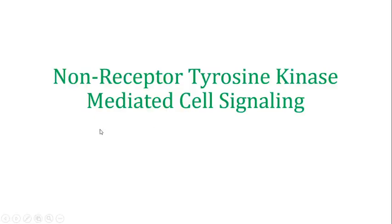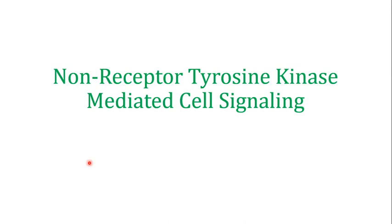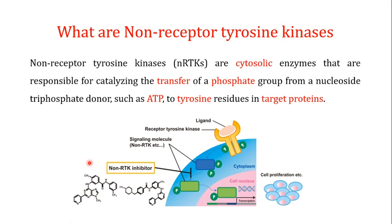Welcome back. In this video we are going to talk about non-receptor tyrosine kinase mediated cell signaling. In the last video we talked about the fibroblast growth factor receptor, which has an intracellular domain known as the tyrosine kinase. Tyrosine kinases are enzymes responsible for transferring a phosphate group from a nucleoside triphosphate donor, such as ATP, to tyrosine residues in a target protein. They form a very small group of kinases in living systems.